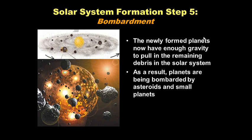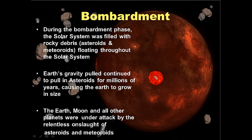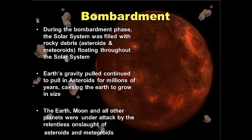That is accretion. Now we have all these planetesimals — maybe 25 to 30 small planets orbiting the Sun. These newly formed planetesimals have enough gravity to pull in the remaining debris in the solar system. As a result, planets are being bombarded by asteroids and meteoroids and rocky material. This is the stage when our moon formed. The solar system was filled with rocky debris and icy chunks; Earth's gravity continued to pull in asteroids and meteoroids for millions of years, causing Earth to grow and swell in size.